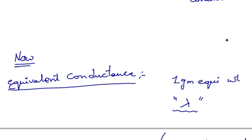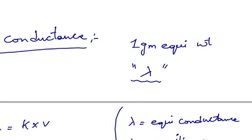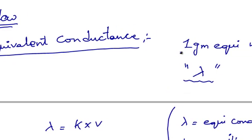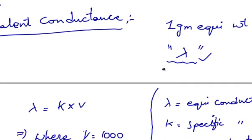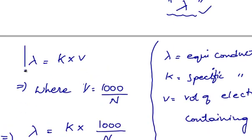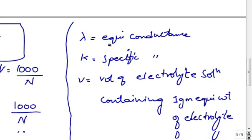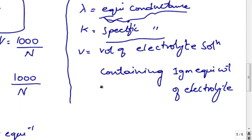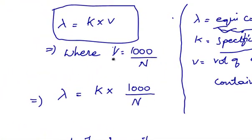Now that we know about conductance, specific conductance, resistance, and specific resistance, let's study about equivalent conductance. Equivalent conductance can be defined as the conductance of an electrolyte solution containing 1 gram equivalent of electrolyte. It is represented by the symbol lambda. The relation between equivalent conductance and specific conductance is given by lambda is equal to K into V, where lambda is the equivalent conductance, K is the specific conductance, and V is the volume of the electrolyte solution containing 1 gram equivalent weight of the electrolyte, where V is equal to 1000 by N, that is 1000 by normality of the solution.